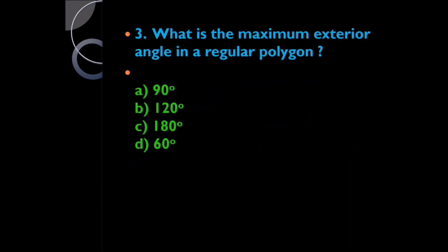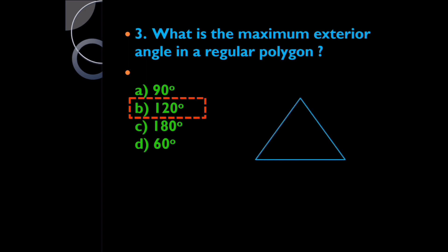Question three: what is the maximum exterior angle in a regular polygon? It is 120 degrees. To get the maximum exterior angle, we find the minimum number of sides in a polygon, which is a triangle. A triangle is the least-sided polygon. When the number of sides increases, the measure of each angle decreases because the angle sum is fixed. So in a regular equilateral triangle, each exterior angle is 120 degrees.